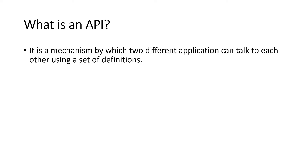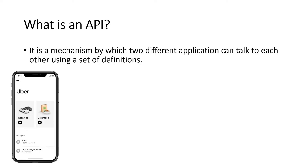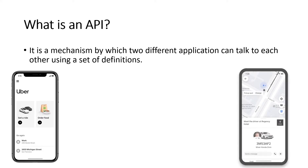You might be thinking: how can two different applications talk to each other? This is where the API comes in. Let's understand this with the popular Uber application — in India we also have Ola. In Uber, your location is picked up automatically from your device if location is turned on, and you put in your destination. After entering source and destination, you see a map — your car is booked and you can see where your driver is and how long it will take.